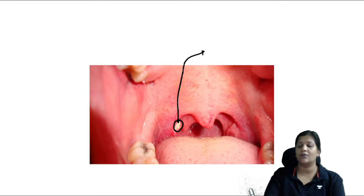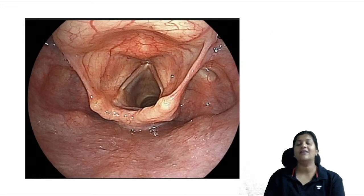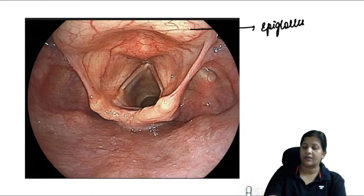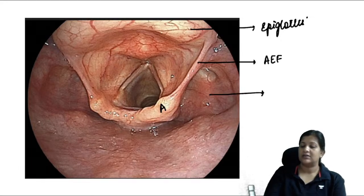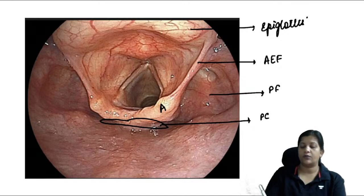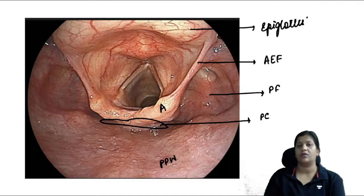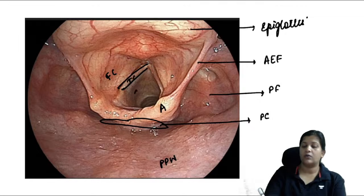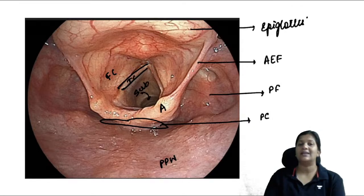The normal larynx image shows: epiglottis, arytenoids, aryepiglottic folds, pyriform fossa, post-cricoid region, and posterior pharyngeal wall. Also visible are the false cords above the true cords, with the subglottis below leading to the trachea.